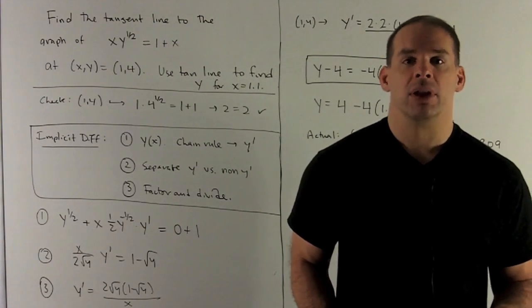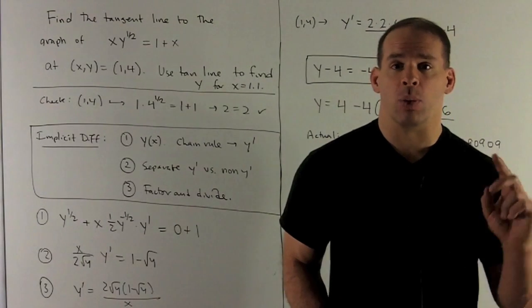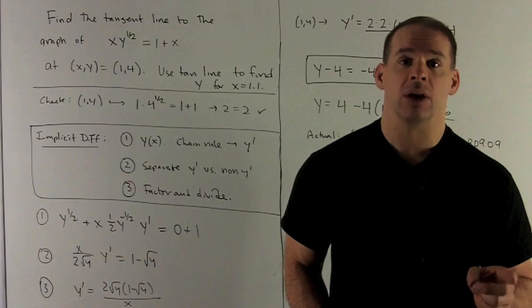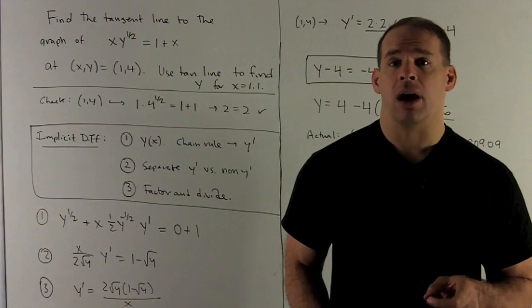As a further step, we're going to treat y as a function of x. So whenever I hit y with a derivative with respect to x, I have to chain rule, meaning we just have to multiply by a y'.